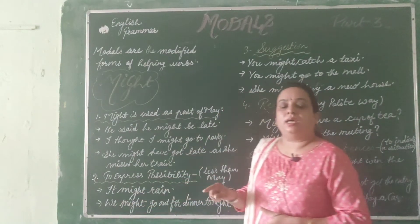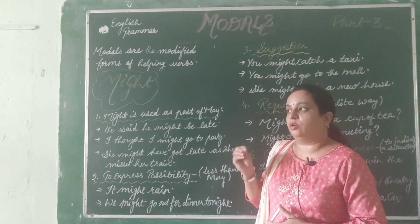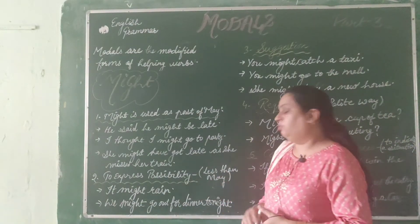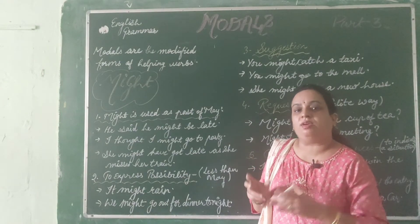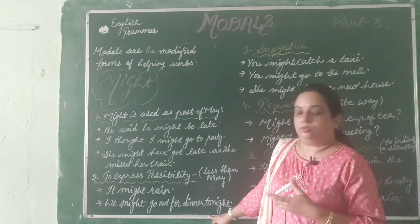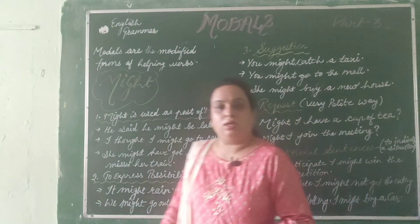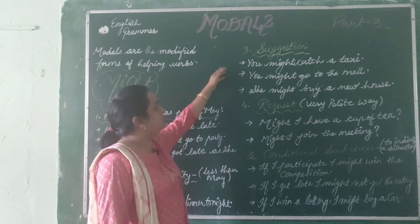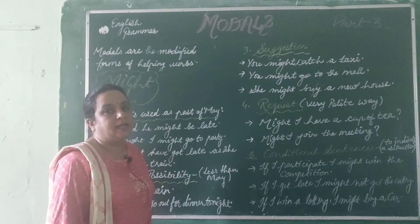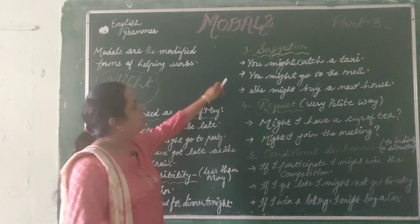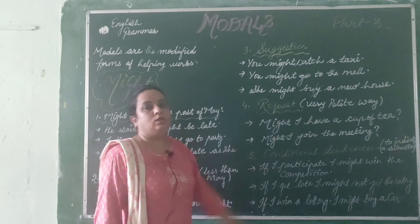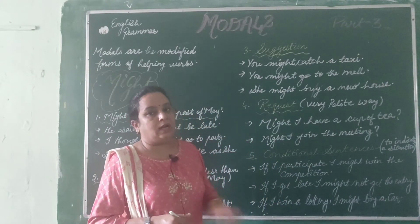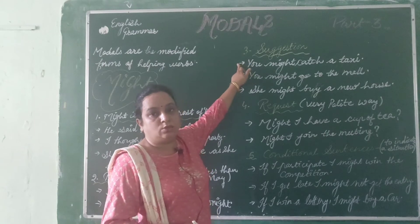'It might rain today' — weak possibility. 'We might go out for dinner tonight' — it is not sure, very weak possibility. For weak possibility, we use might. The third use of might is to give suggestions. For example, 'You might catch a taxi,' 'You might go to the mall,' 'She might buy a new house.' So might can also be used for suggestions.